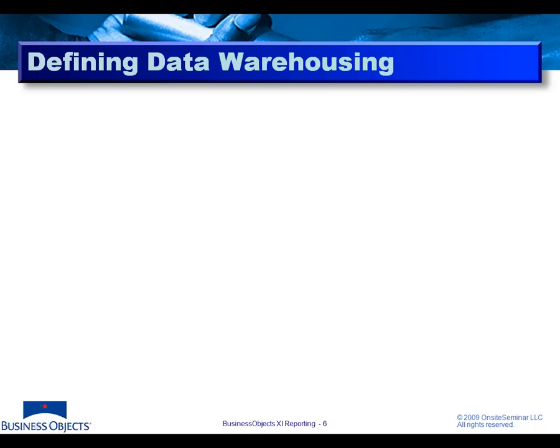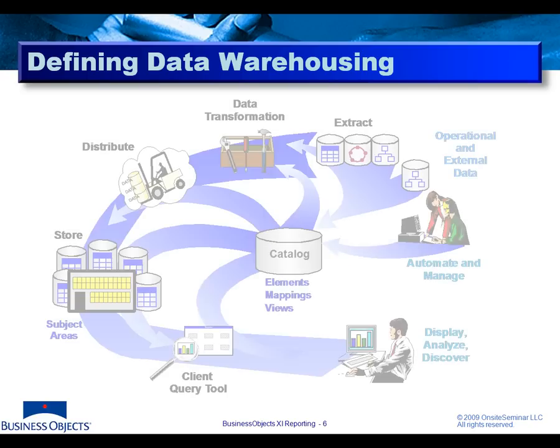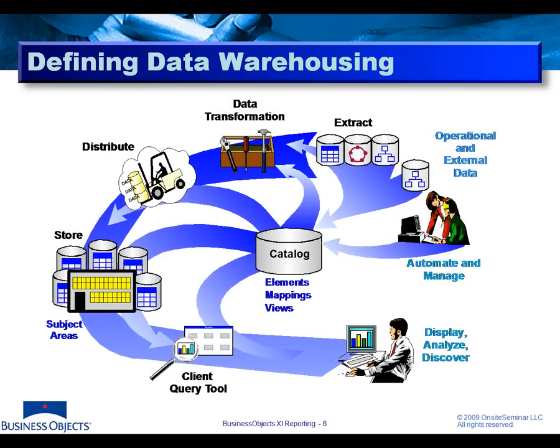Let's look at the transformation and the creation of a data warehouse — the full lifecycle of what's going on as we're building a warehouse itself. On the far right hand side we have our operational and external data gathered from our transactional-based systems. Our first job is simple extraction of this information, where we build different types of extraction criteria and pipelines designed to go into our operational systems and extract information.